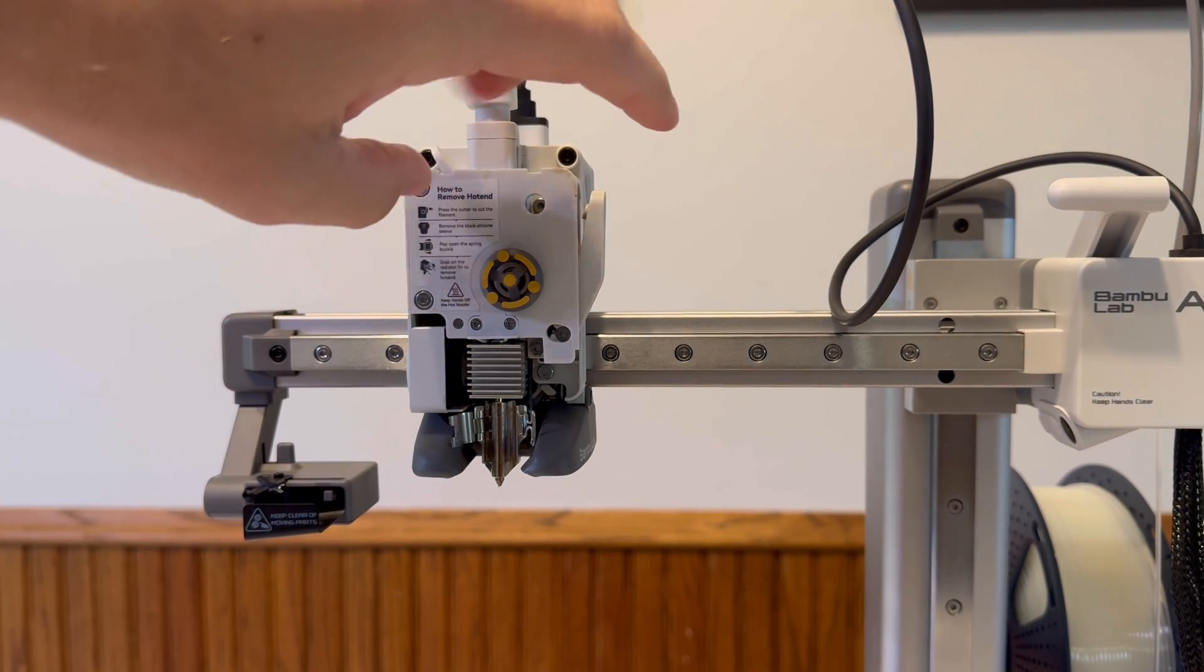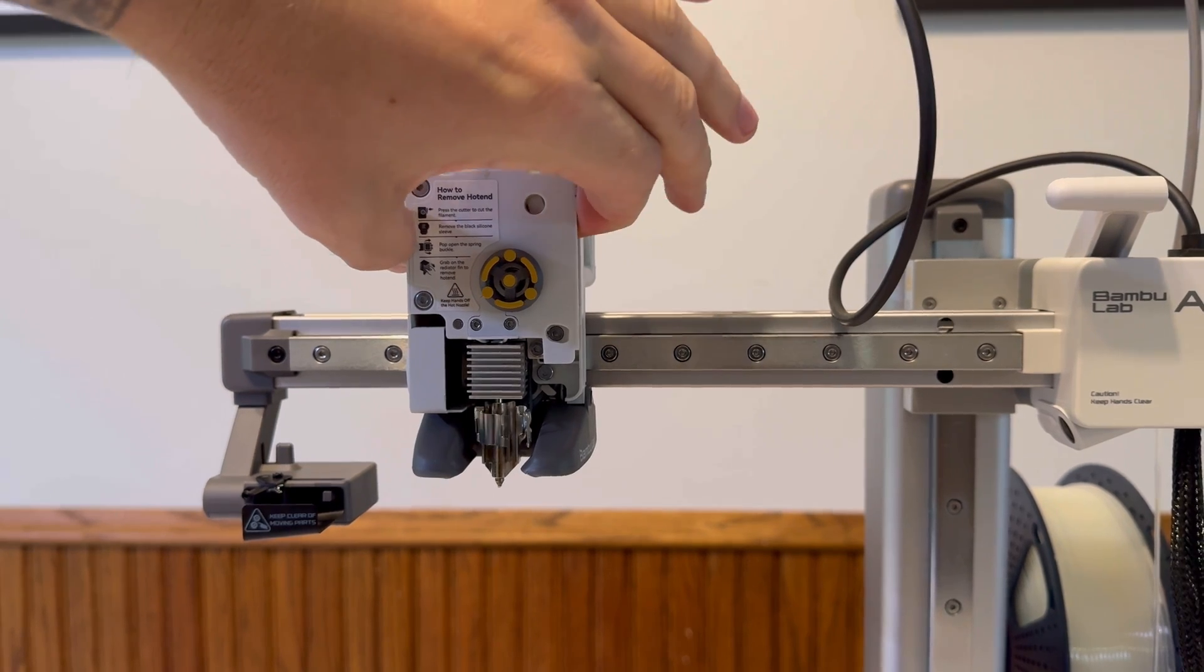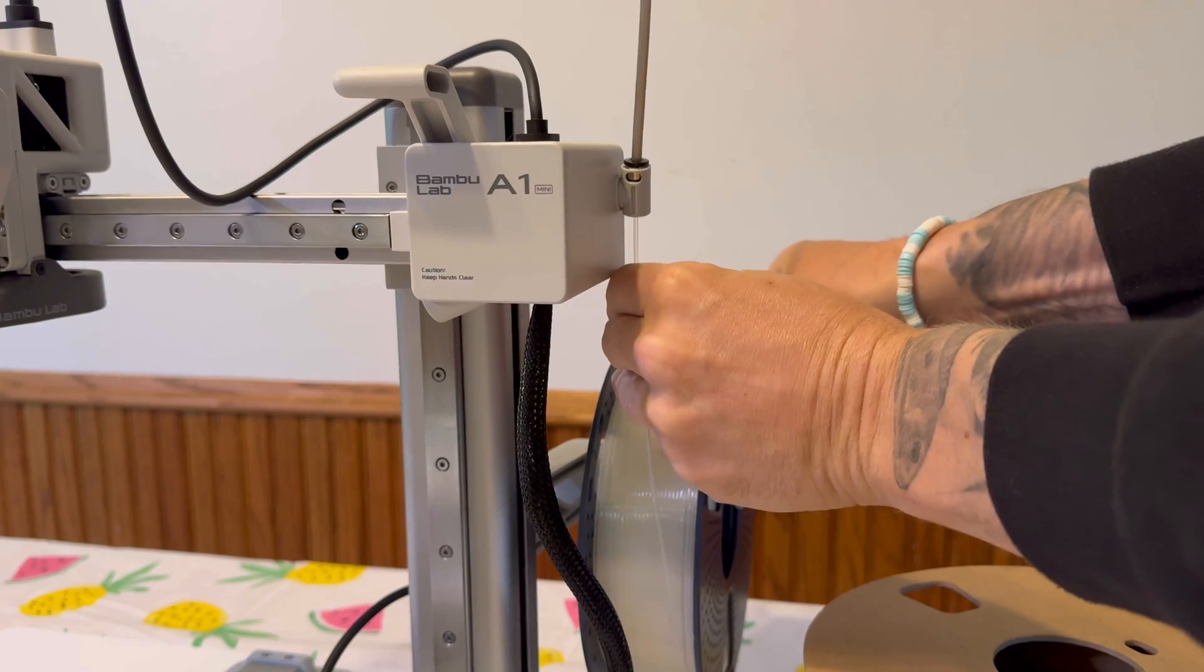Next what we want to do here is we want to cut the filament by using this side cutter. All we have to do is click this in here. Give it a hard click. Then what we can do here is retract the filament. So give that a little pull.